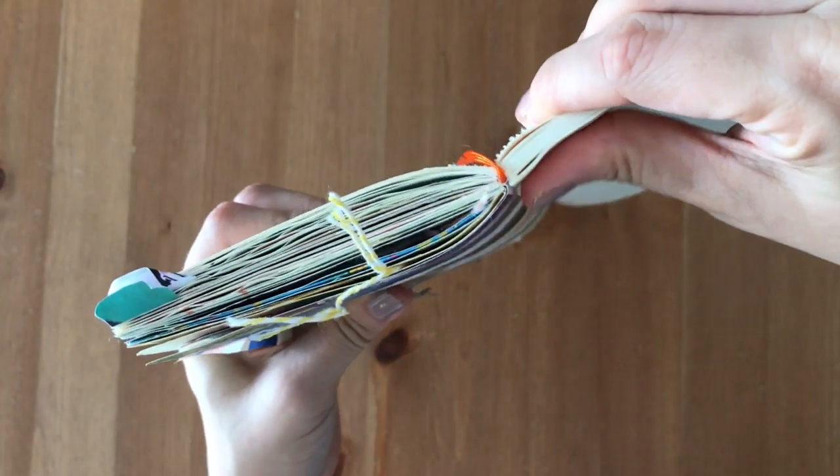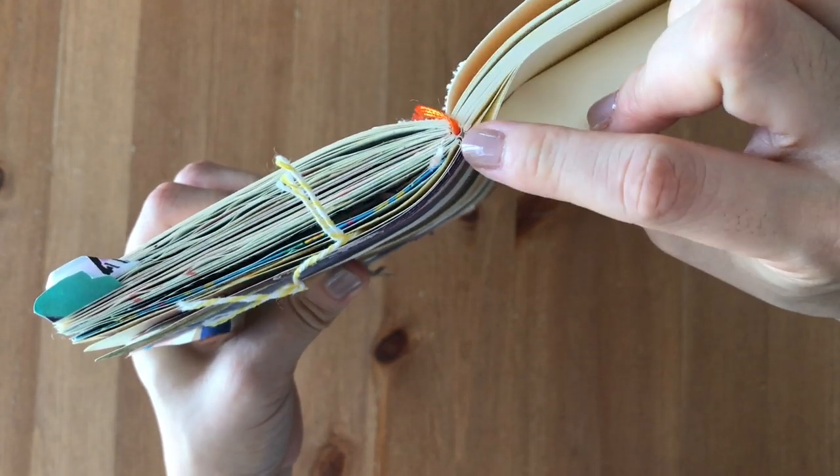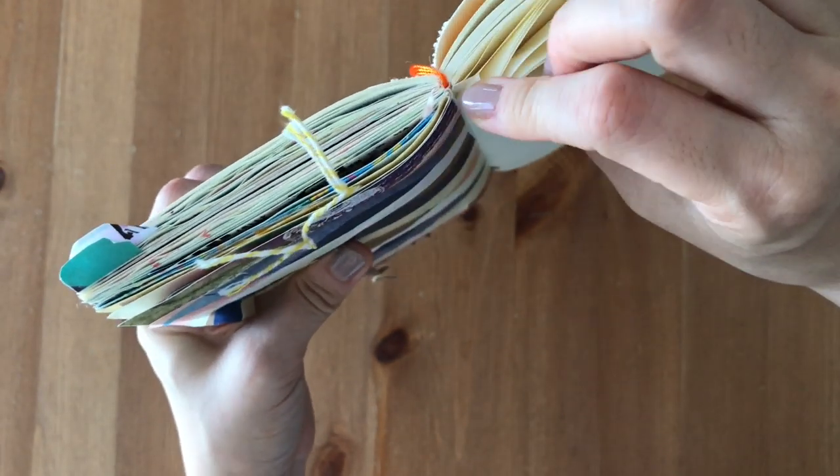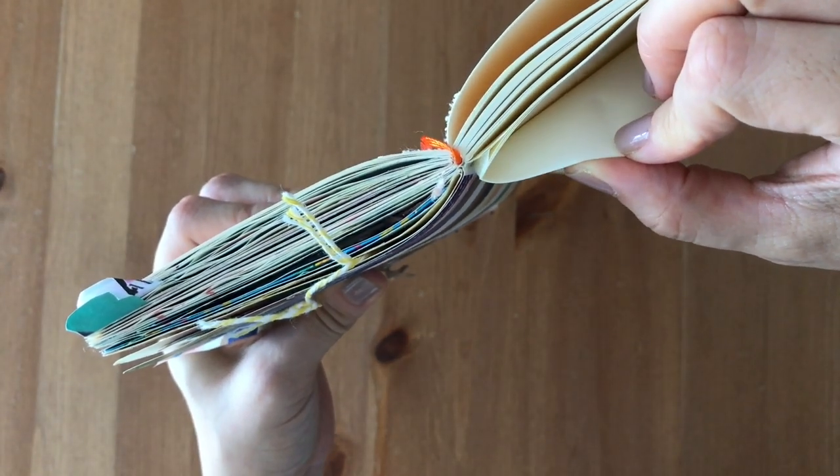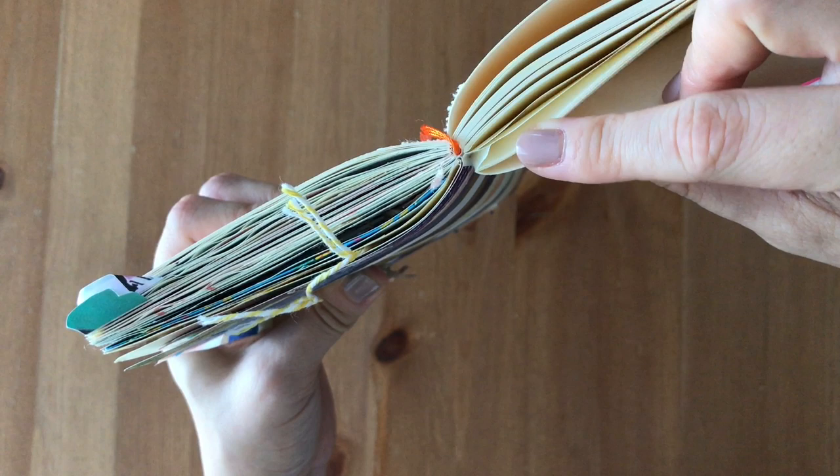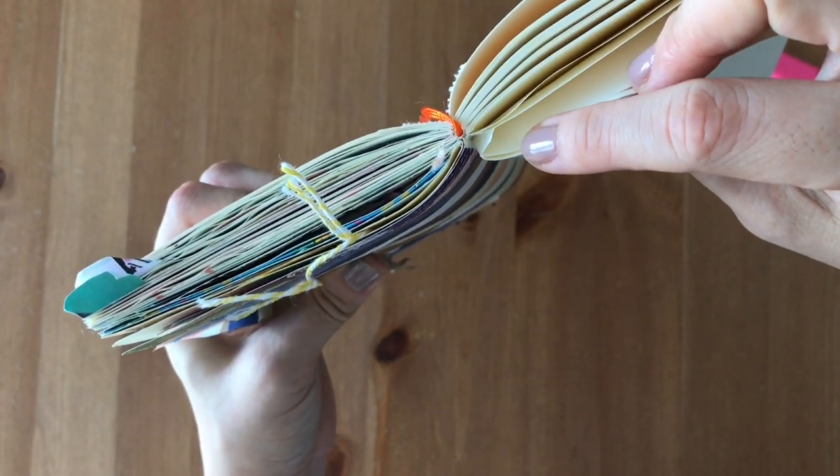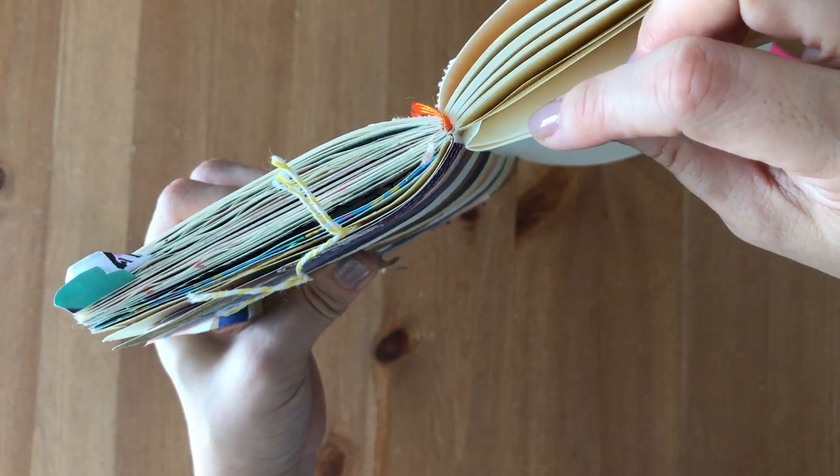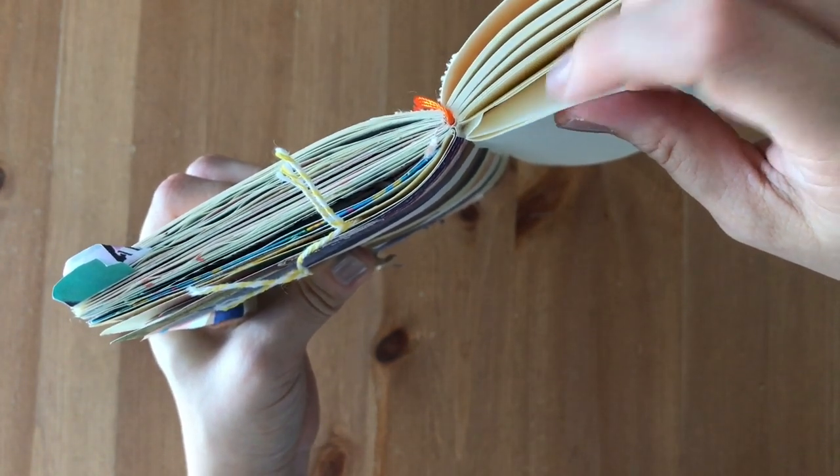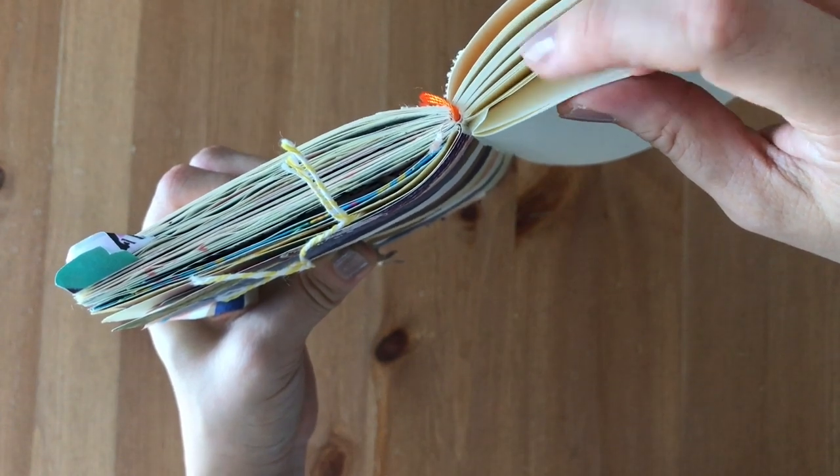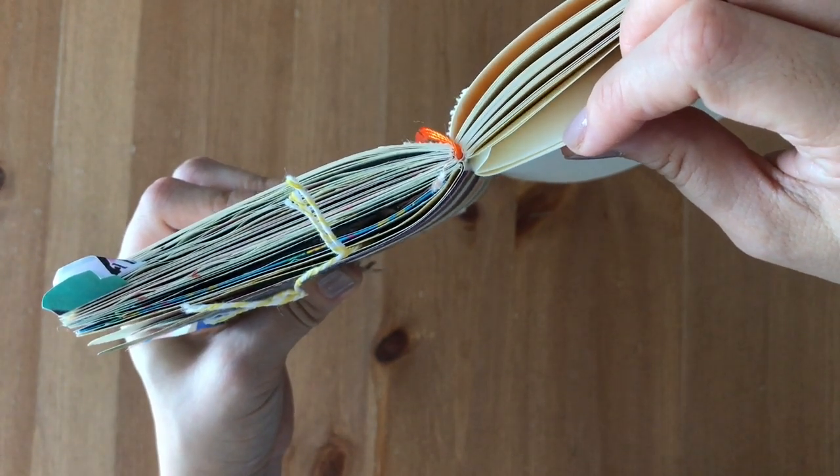When you look closely, you'll see there are signatures. The signatures are basically a collection of paper folded in half, like a pamphlet. All of these pamphlet-type notebooks or small signatures are glued in and sewn in together.